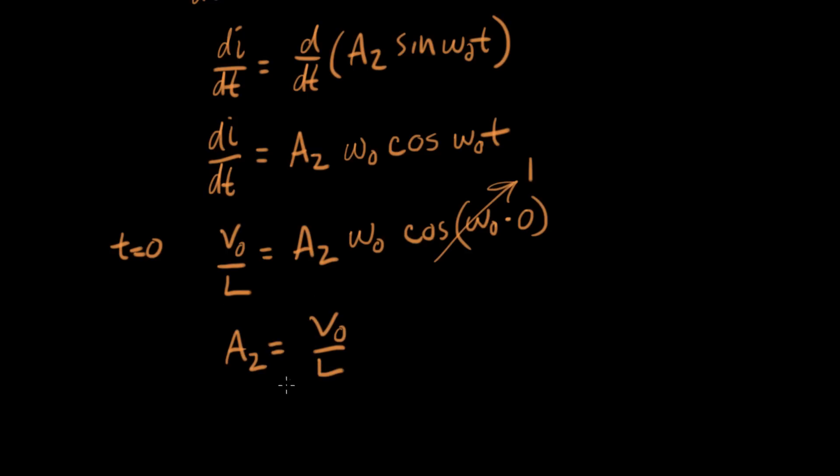Now we've solved for our second adjustable parameter and we can write I. I was A2 sine omega-naught t. So let's fill it in for A2. I equals A2 is V-naught over L omega-naught times sine omega-naught t.